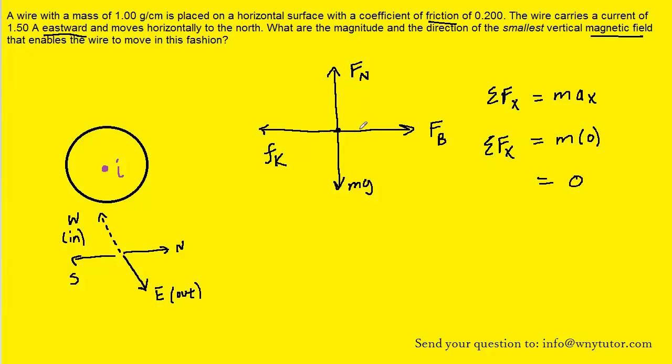For the sum of forces in the x direction, we have two forces: F_B and F_K. We can call F_B positive since it points to the right, and F_K negative. So F_B minus F_K equals zero. Let's add F_K over to the other side, and we can see that the magnitude of the two forces is equal.